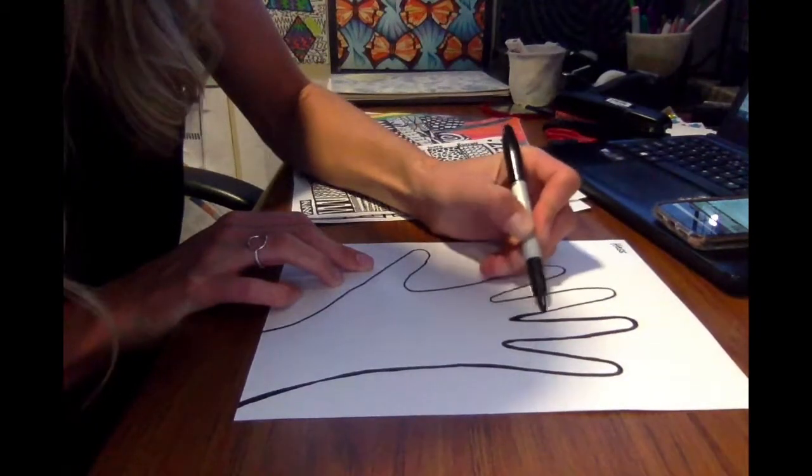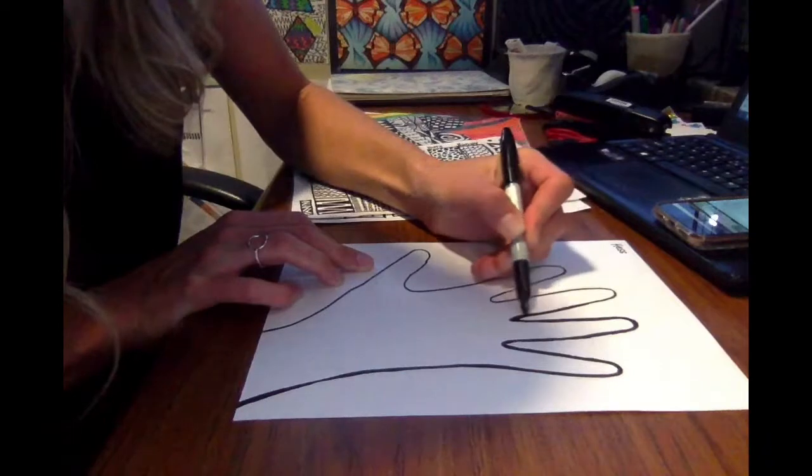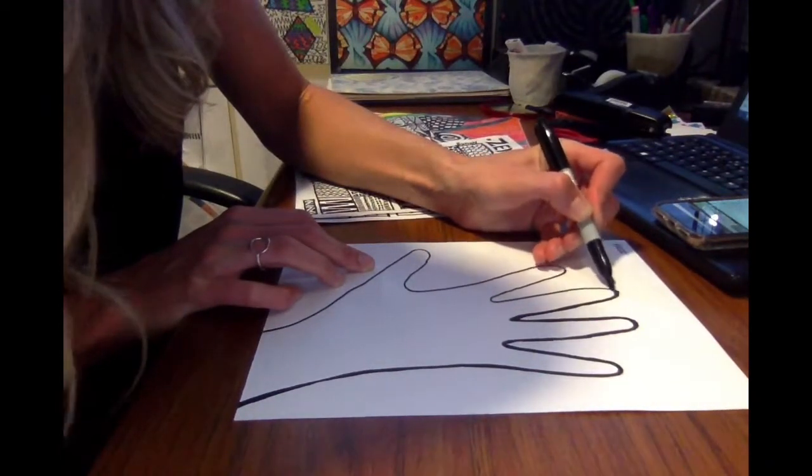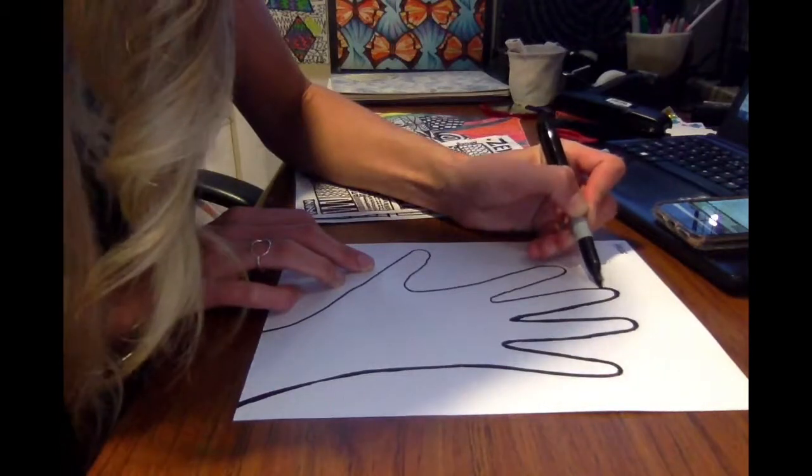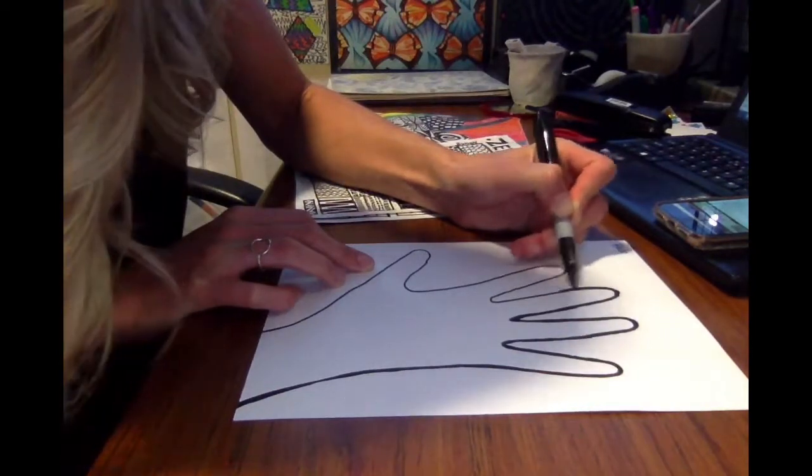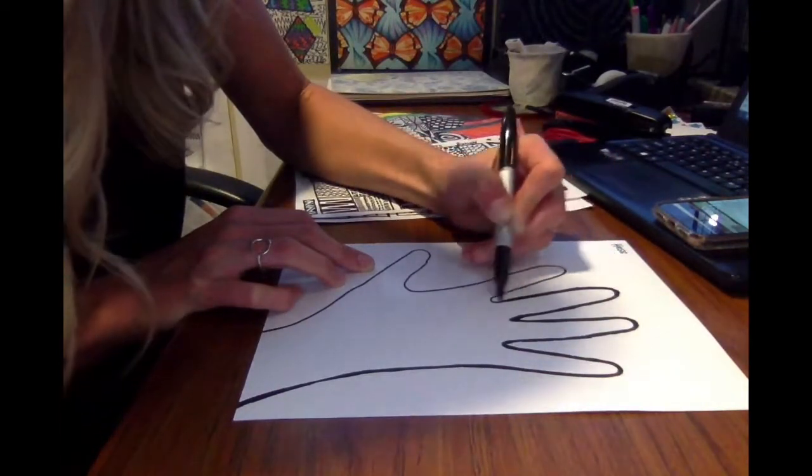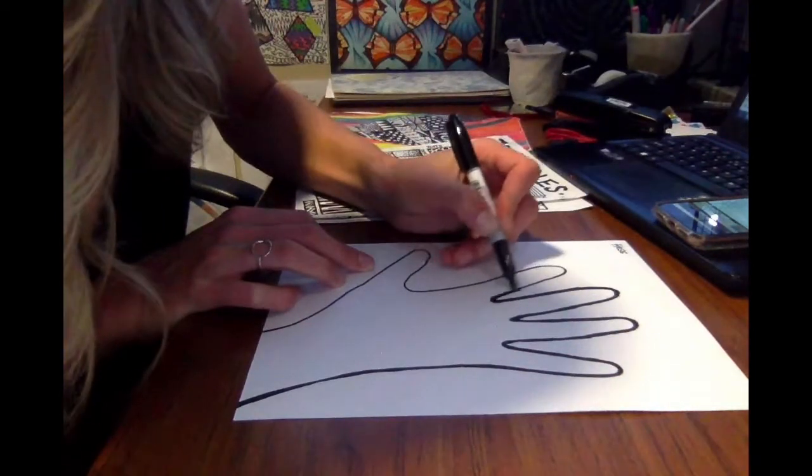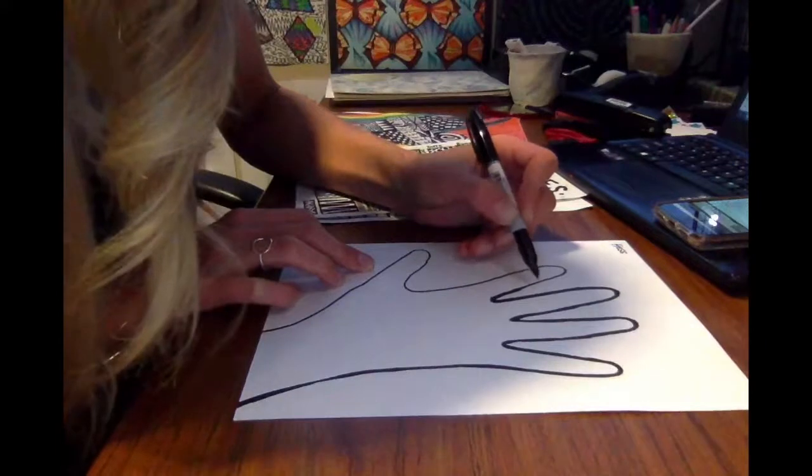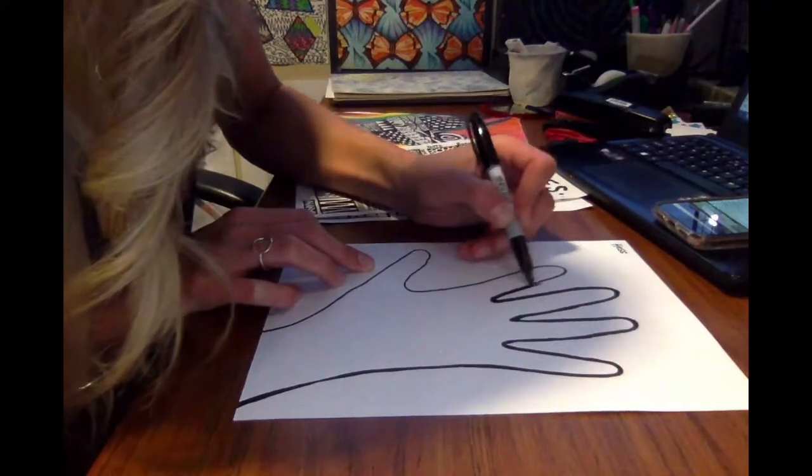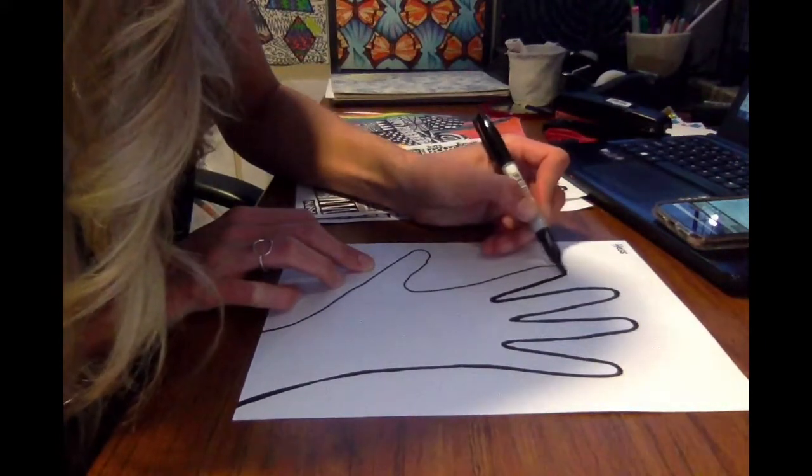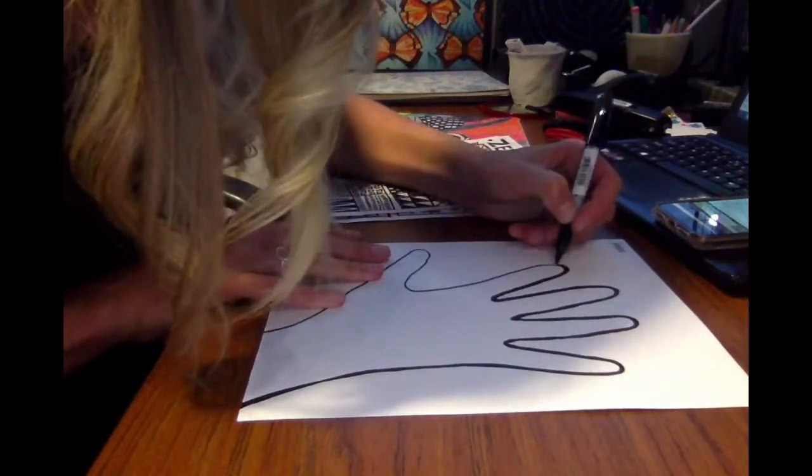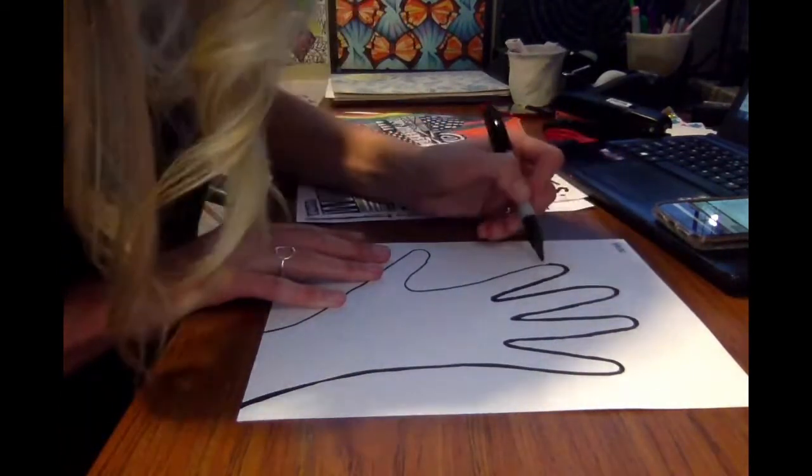My hand's a lot bigger than your hand so you guys can definitely have some time to catch up. Now while I'm doing this I'm going to talk about a Zentangle. So a Zentangle, the word zen is supposed to have a calming meaning, and a Zentangle is patterns and lines, simple patterns and lines that almost anybody can make.